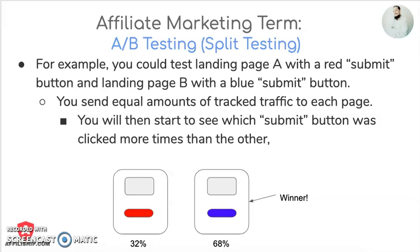For example, you could test landing page A with a red submit button and landing page B with a blue submit button. You send equal amounts of tracked traffic to each page, and you will then start to see which submit button was clicked more times than the other.